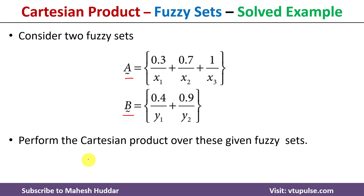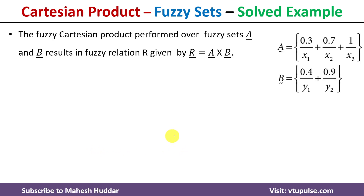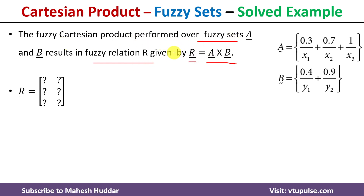Given these fuzzy sets, we need to perform the cartesian product on them. Whenever you perform cartesian product on fuzzy sets A and B, you will get a fuzzy relation R, denoted as R = A × B. The result is a fuzzy relation with a certain number of rows and columns. The question is: how many rows and columns will be in the fuzzy relation?